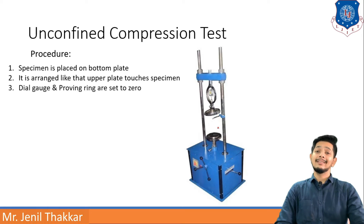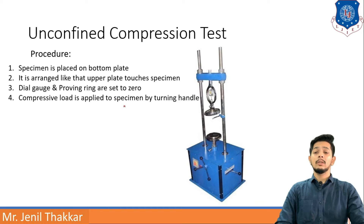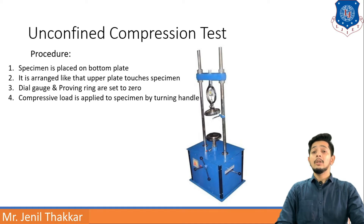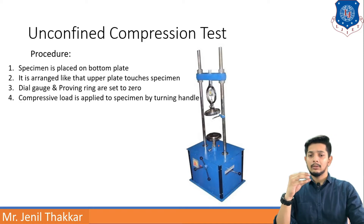The next step is that the dial gauge and proving ring are set to zero. Here you can see the dial gauge and here there is a proving ring — both should be set to zero. Compressive load is then applied to the specimen by turning the handle. Here you can see the handle; by turning it we apply compressive load to the soil specimen.